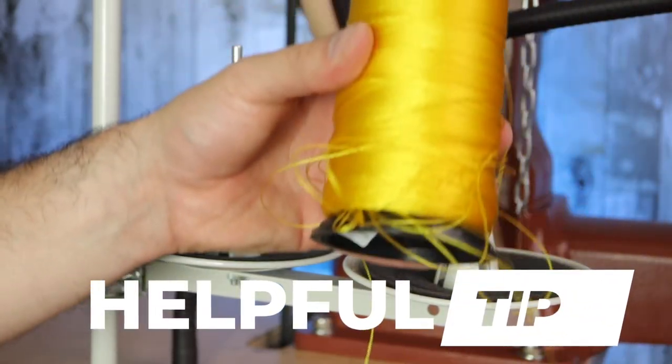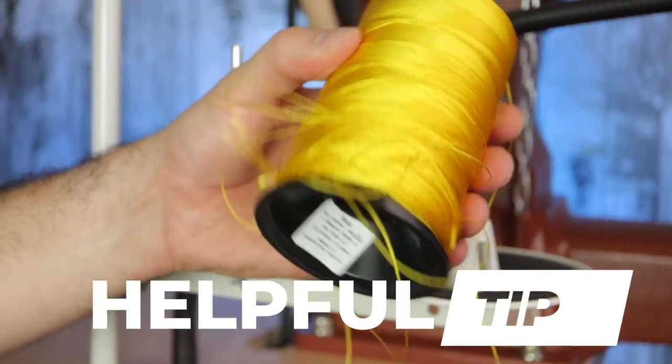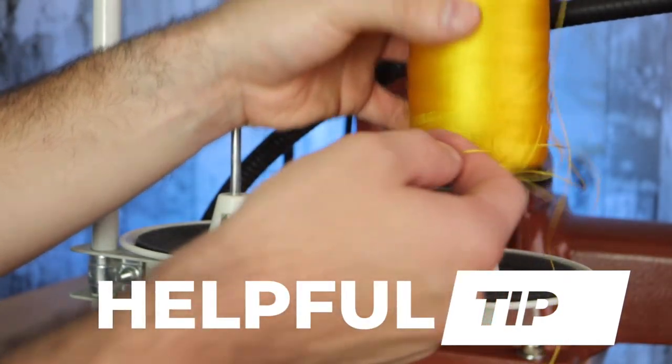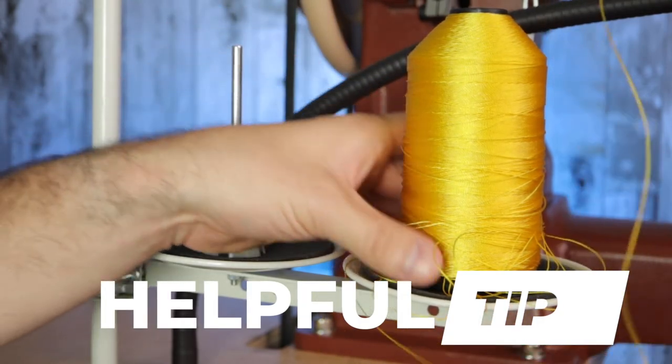Here's a helpful tip: try to avoid dropping your thread spool because it can become deformed and the thread does not come off the cone easily anymore. Also be aware that if you drop your bobbin, that could potentially have thread distribution issues in the bobbin case.